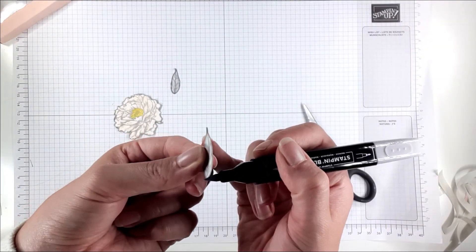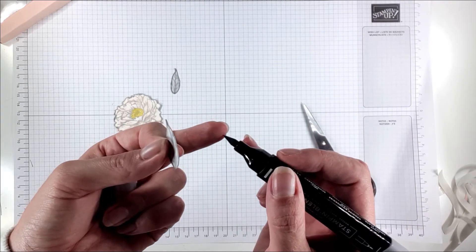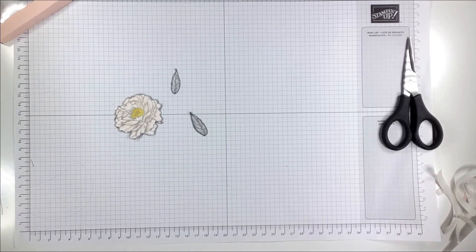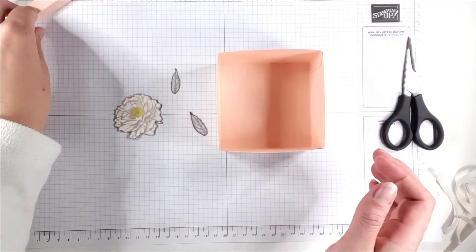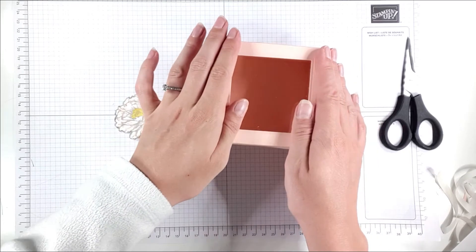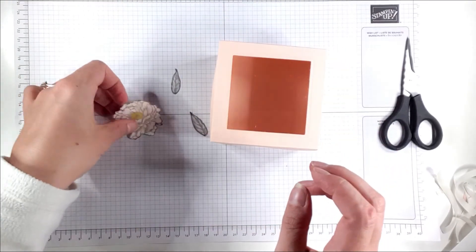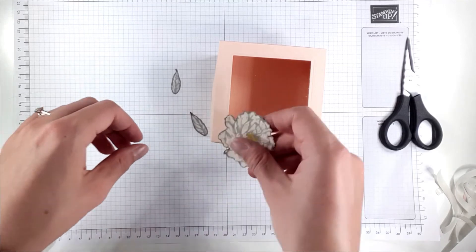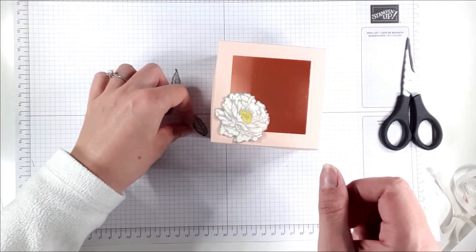Just make sure that when you're doing this you don't do it too close to the tip because if you do it close to the tip it might ruin the tip. I'm going to bring back in my box base. I can put the lid on there so we've got the lovely window lid and then I'm just going to lay out my flower and my leaves on there.